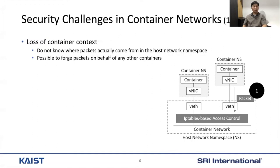In this work, we point out five security challenges in current container networks. First, we lose the context of a container as soon as a network packet from a container is passed to a container network. We can think that a container network is a small version of our legacy network, which means that once a packet is delivered to a container network at the host side, it's like the packet is in the middle of a network somewhere between network switches. Thus, we cannot actually guarantee where the packet originally comes from, and it is possible that some attackers forge network packets impersonating other containers.